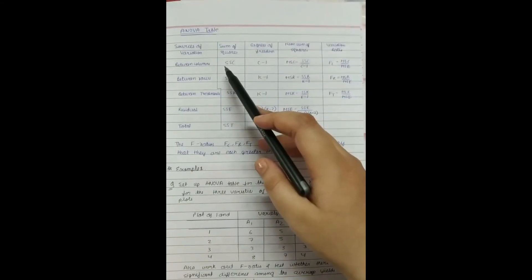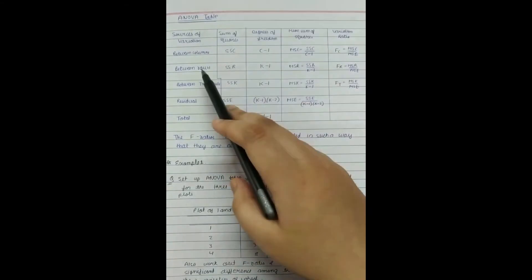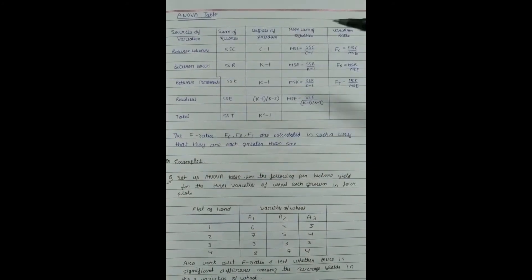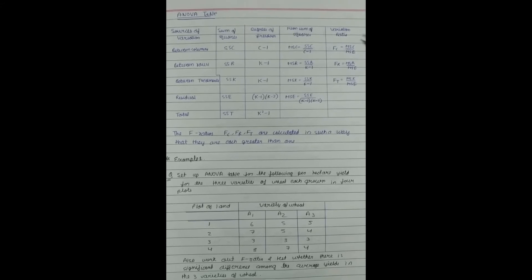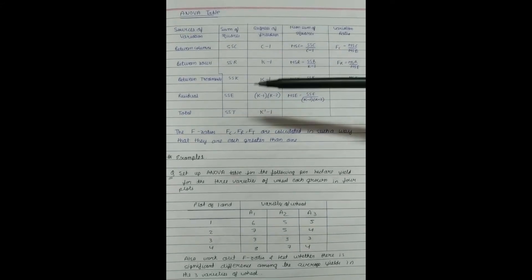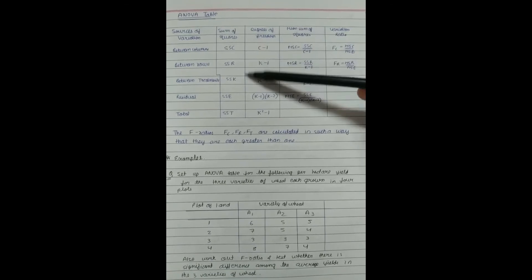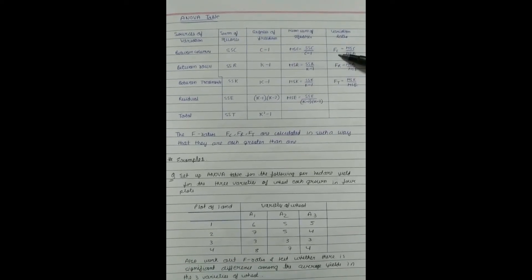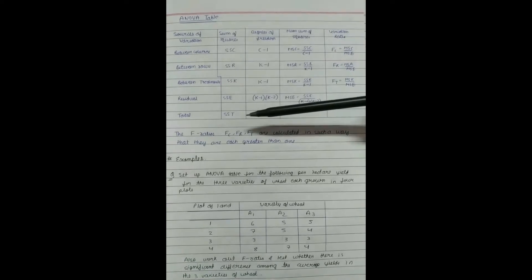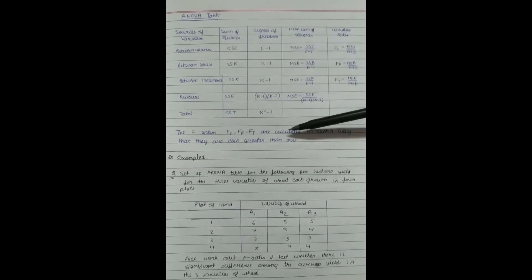The ANOVA table for three-way classification includes sources of variation (between columns, between rows, between treatments, residual, and total), sum of squares, degrees of freedom, mean sum of squares, and variance ratio. We fill in the rows and columns using the values calculated, and all F ratios should be greater than 1.